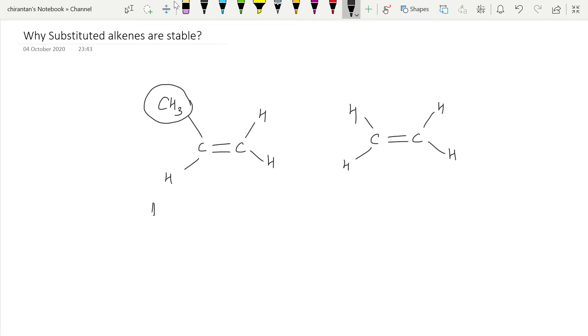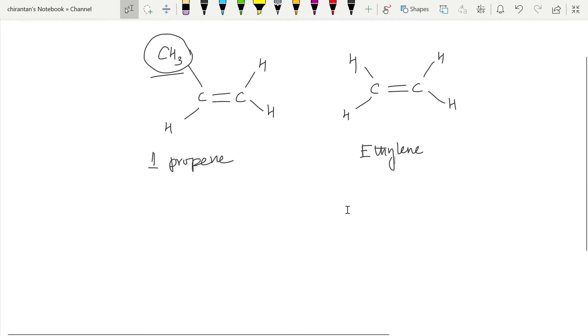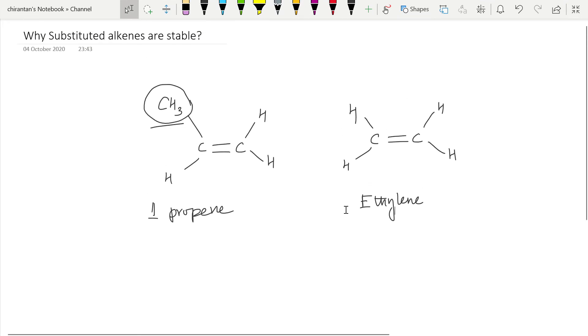The first one is propene and the second one is ethylene. In propene we can see there is one methyl substituent, but in ethylene there is no alkyl substituent. We will try to compare the stability of these two alkenes and explain why one is more stable than the other.